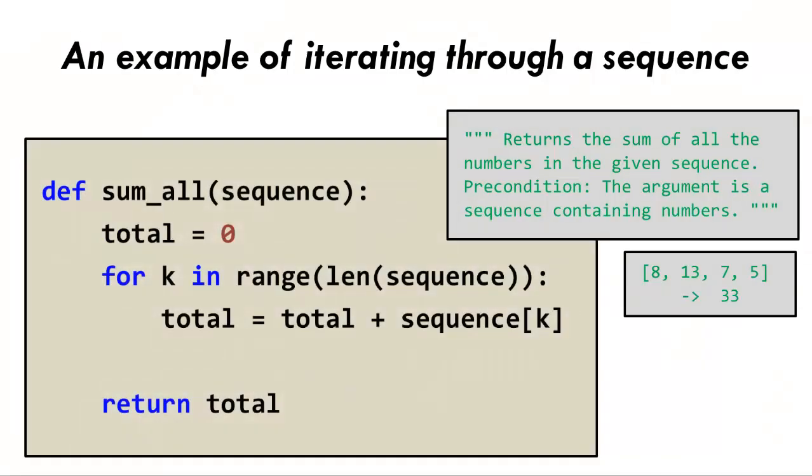Here is the code. The sum_all function here takes a sequence as its parameter. So it is not surprising that the variable name sequence appears in the body of the function. The actual sequence will be whatever sequence is passed to the function. For example, the four element sequence shown to the right.